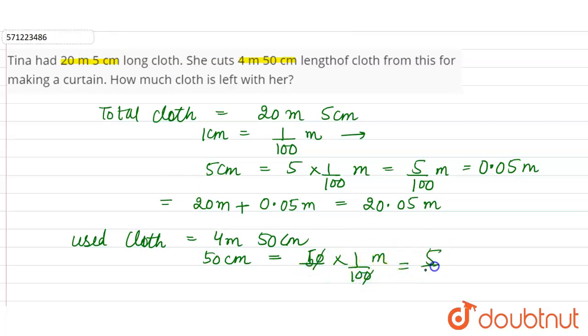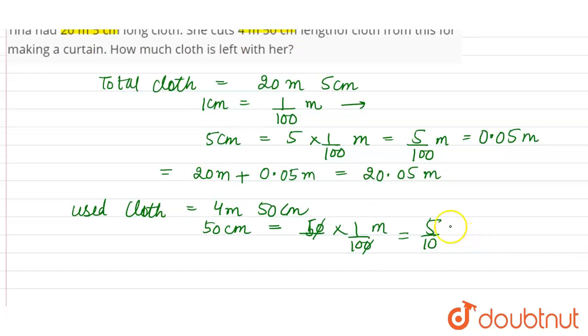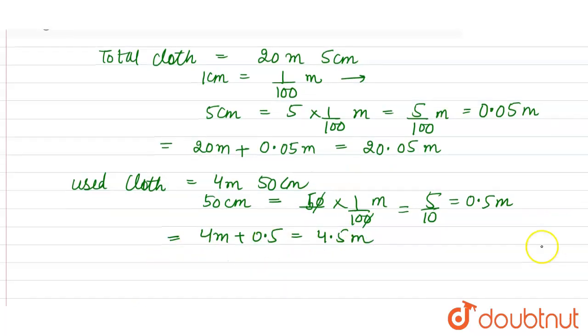So used cloth is 4 meter plus 0.5 meter, which is equal to 4.5 meter. Cloth has been used by Tina. Now cloth left means we have to find, we have to subtract used cloth from the total cloth.